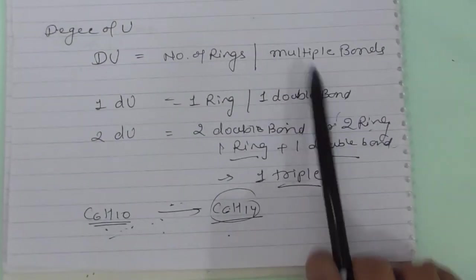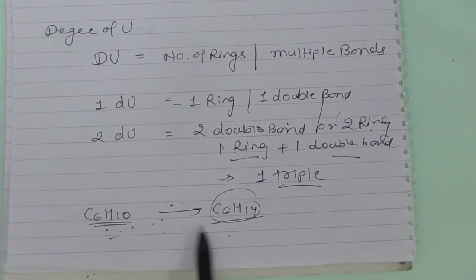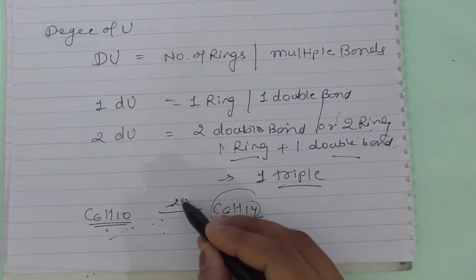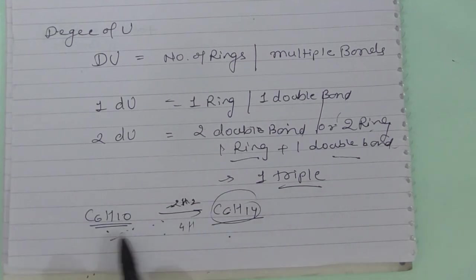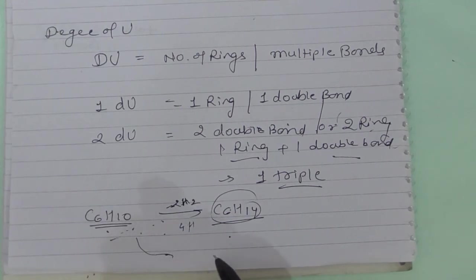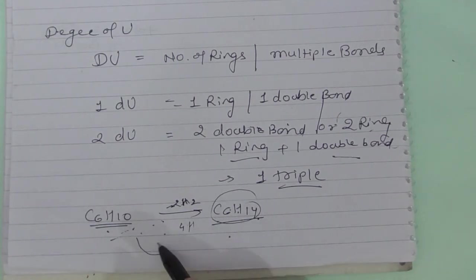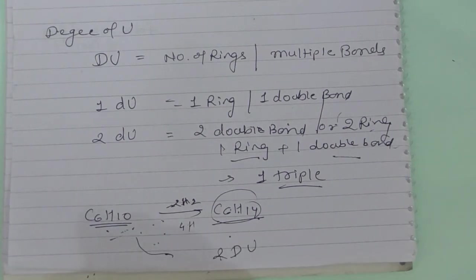Suppose we have a saturated compound C6H14. If I convert the saturated into unsaturated, I have to remove two pairs of hydrogen — that is, four hydrogen atoms — to get C6H10. So C6H10 is an unsaturated compound with two degrees of unsaturation.